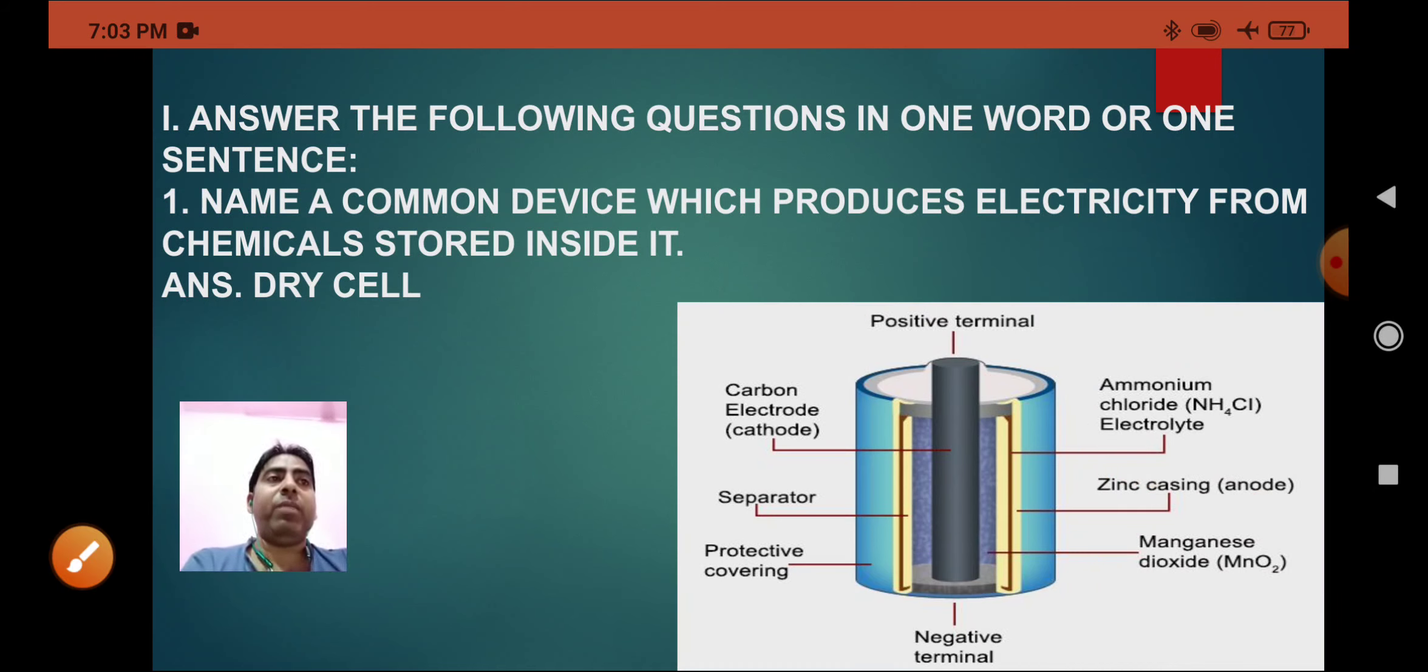When we connect the tip of the metal cap and the base of the zinc can with a metal wire, the current flows through it.